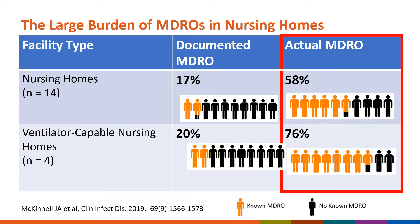During the study, nursing home residents were tested to see if they were colonized with an MDRO. The second column shows the percentages of residents who actually had an MDRO after testing was complete. In the nursing homes that did not provide ventilator care, almost 6 out of 10 residents were found to have an MDRO. And in the ventilator-capable nursing homes, the number went up to almost 8 out of every 10 residents. So if your nursing home has 100 residents, this would be the same as having 80 of those residents colonized with an MDRO.